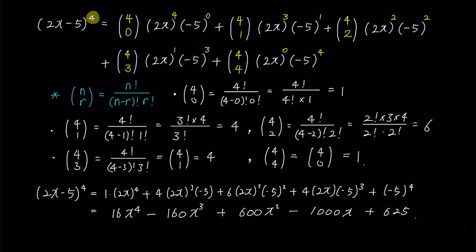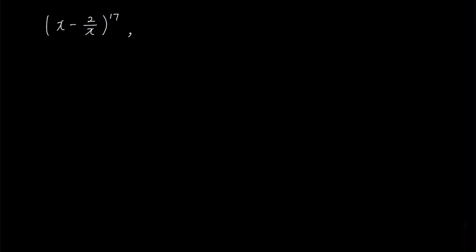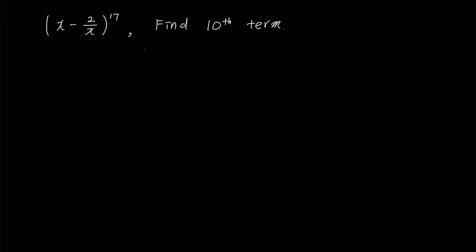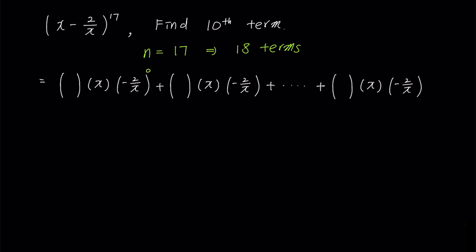The first problem was an example to show how to apply the math from the previous video. The second example will be slightly different — we'll try to find only the 10th term without expanding all the terms. Since n is 17, there will be 18 terms in total. The exponent of the second term, negative 2 over x, will increase from 0 to 17. Since the exponents start from 0, the exponent value of the 10th term will be 9.